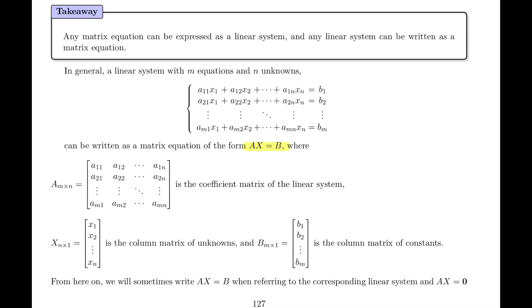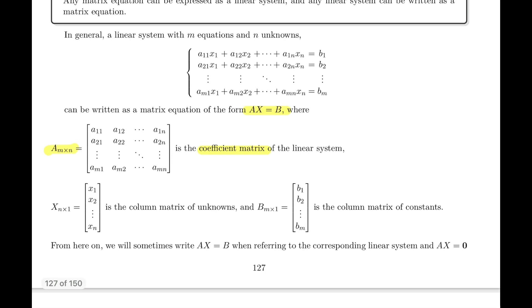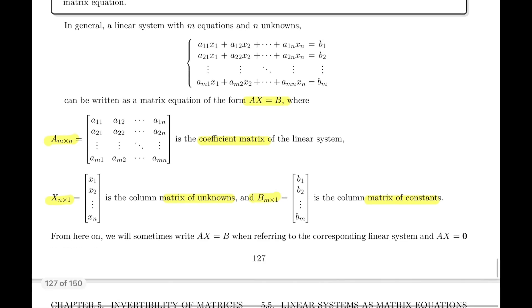So as a matrix equation, we're going to write it like this, Ax equals b, where A is an m by n. It's the coefficient matrix. We introduced this way back when we started linear systems. So it's the matrix where we don't include the column of constants, but just the coefficients of the variables, and you notice it's m by n because m equations and n variables. The matrix x is an n by 1 because it's the matrix of unknowns, and we have n unknowns or n variables. And finally, the matrix b is an m by 1 because that's how many equations we have. So that's the matrix of constants.